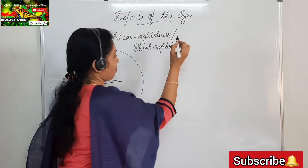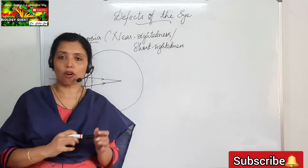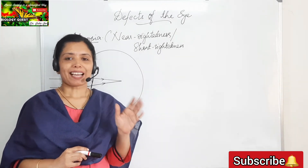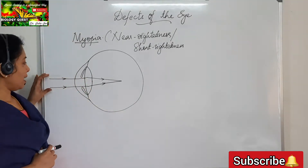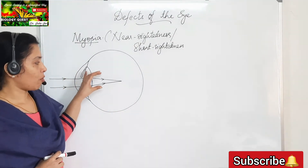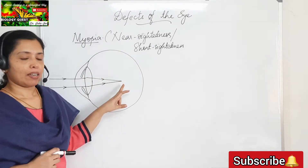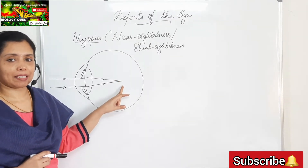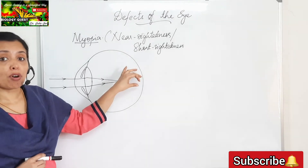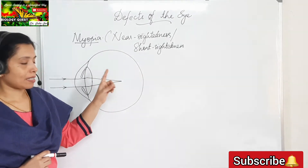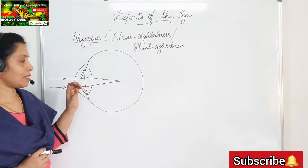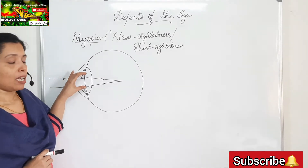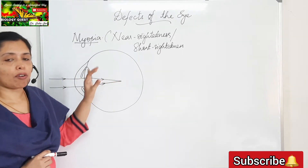A person having myopia is able to see nearby objects clearly, but distant objects appear blurred. What is actually happening is the light rays from the distant object are falling in front of the retina — that is, the image of the object is falling in front of the retina. Actually, the image has to be focused on the retina, but in myopia, the light rays coming from the distant object converge and fall in front of the retina.